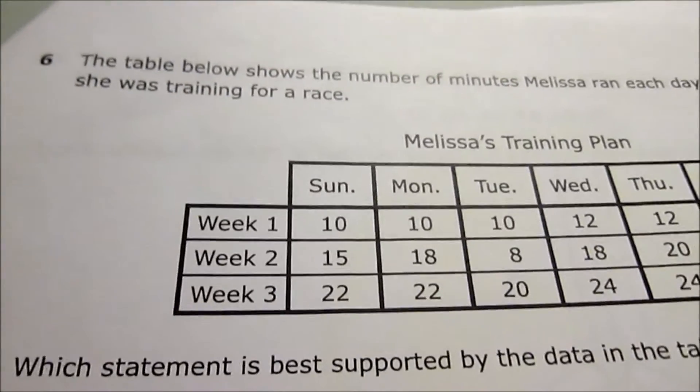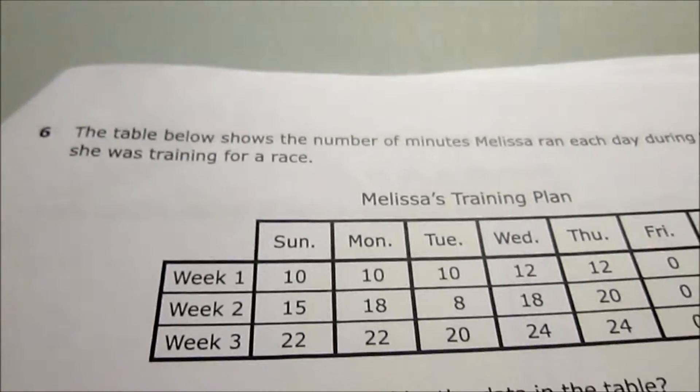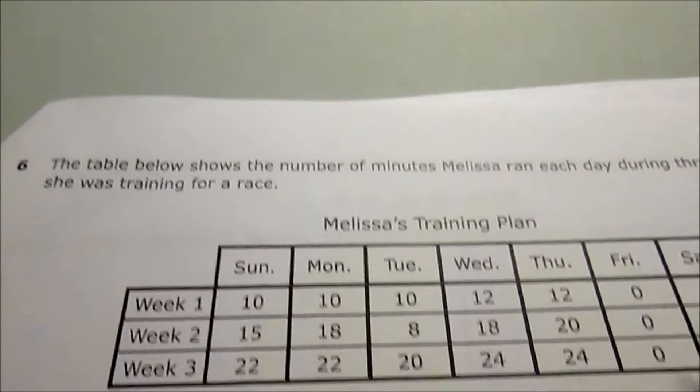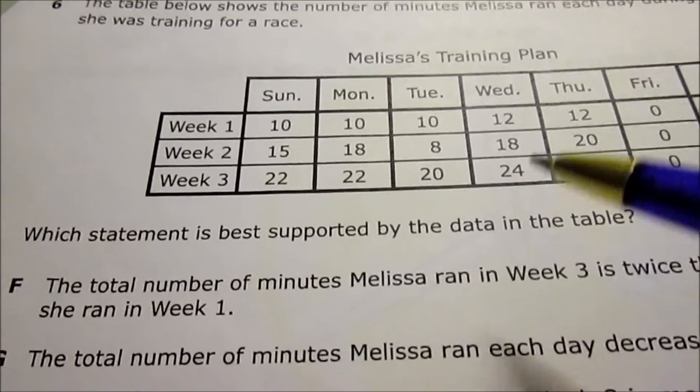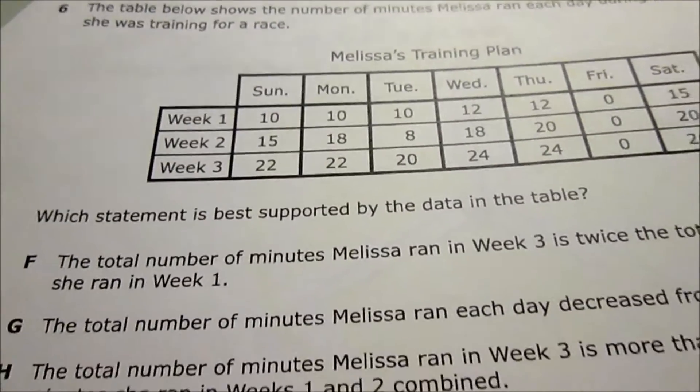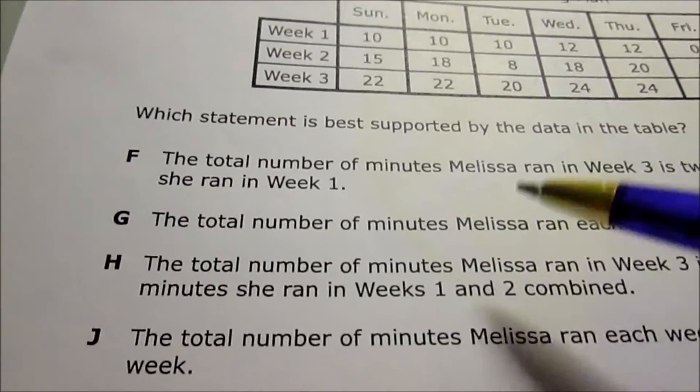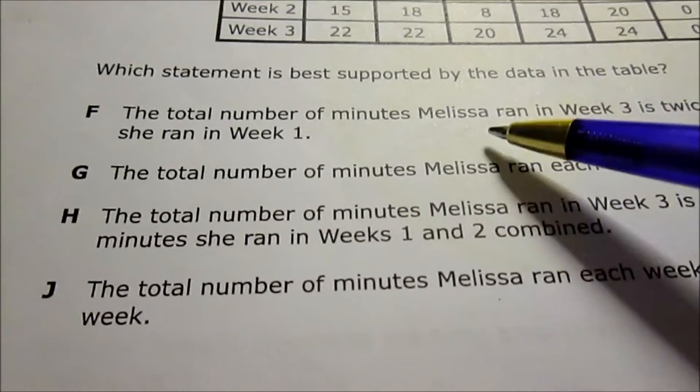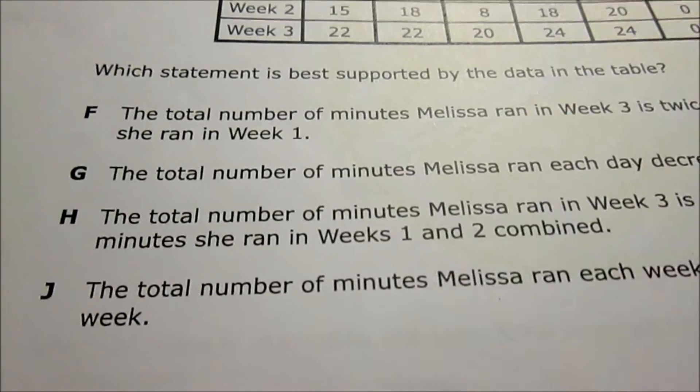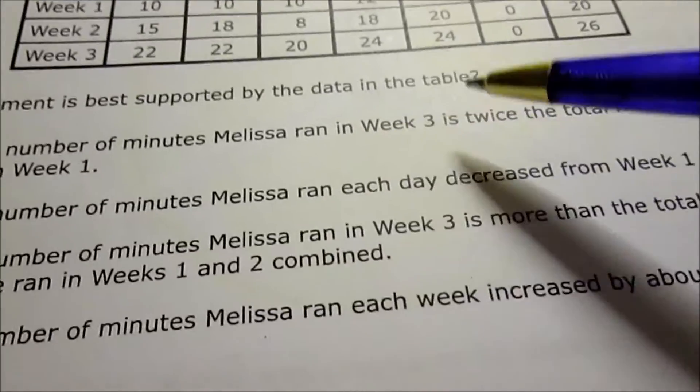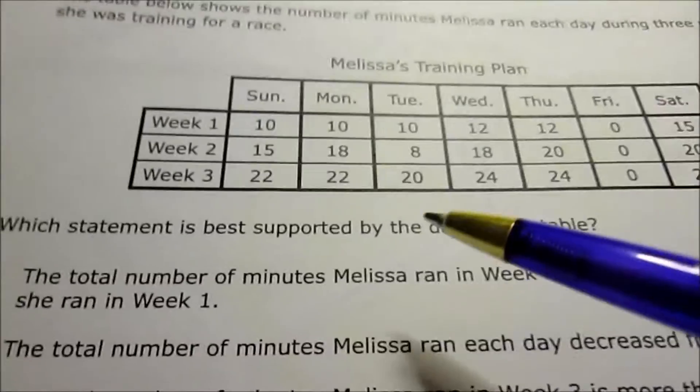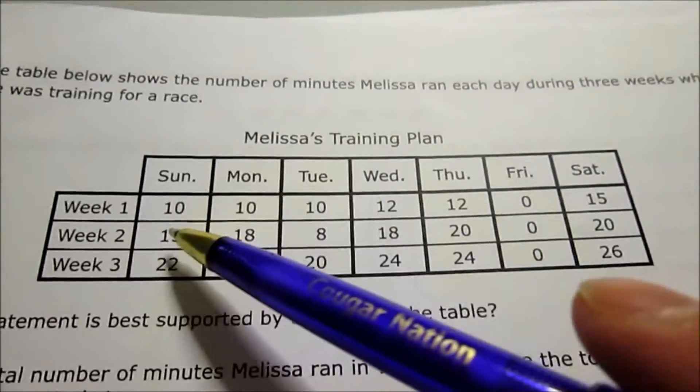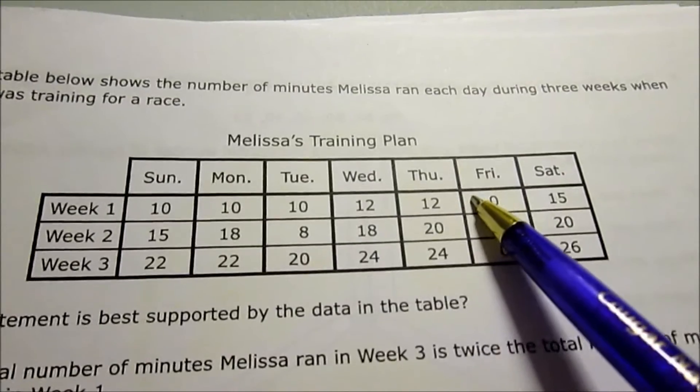Question number 6 gives you a table showing how much Melissa ran during three weeks while training for a race. It says which statement is best supported by the data in the table. When it comes to these types of questions where you have to pick the correct statement, I have to look through each one and check if, for example, F is true or false.